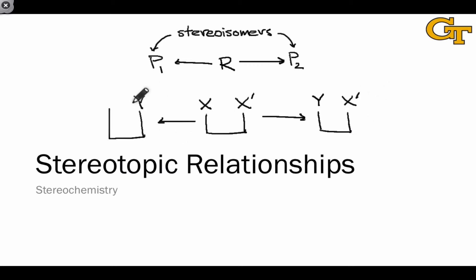And if those two products turn out to be stereoisomers, we can come to a conclusion about the spatial relationships between the groups in the original molecule. This relationship between the groups in the original molecule is what's referred to as a stereotopic relationship. And these are the focus of this set of videos.